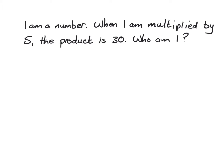Here's one for you to solve: 'I'm a number. When I'm multiplied by five, the product is thirty. Who am I?' See if you can set it out using algebra and then solve it. Put the video on pause and come back when you're ready.